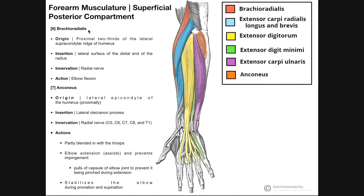Biceps brachii is most active during elbow flexion when the forearms are in complete supination, and brachialis is most active in elbow flexion when the forearms are in pronation. Brachioradialis is most active in elbow flexion in mid-pronation/mid-supination. Following the muscle fibers down, they insert on the lateral surface of the distal end of the radius. This muscle does not cross the wrist joint and therefore can have no action on the wrist. Brachioradialis is innervated by the radial nerve.